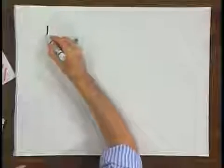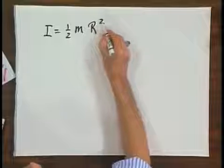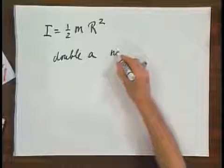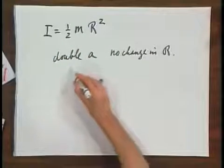Now for a given density, if I take a disk of a given material — let's say it's aluminum — we can ask the question: what happens when we make the disk thicker, and what happens when we make the disk larger? The moment of inertia of that cylinder, as we just derived, was one-half m times R². Now suppose I double the thickness A, but there is no change in R. You may say it's independent of A, so nothing changes — but that's not true, because the mass depends on A. If you make the disk twice as thick, the mass will double. And if the mass doubles, the moment of inertia will double.